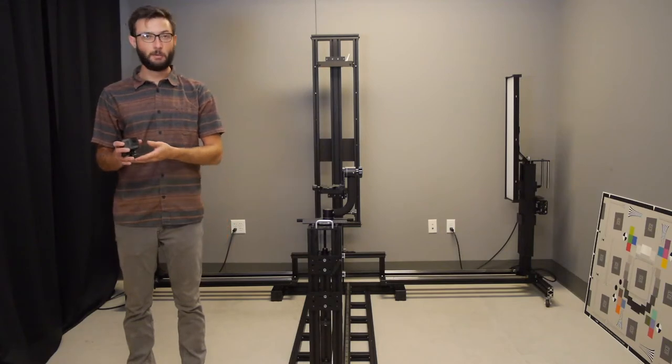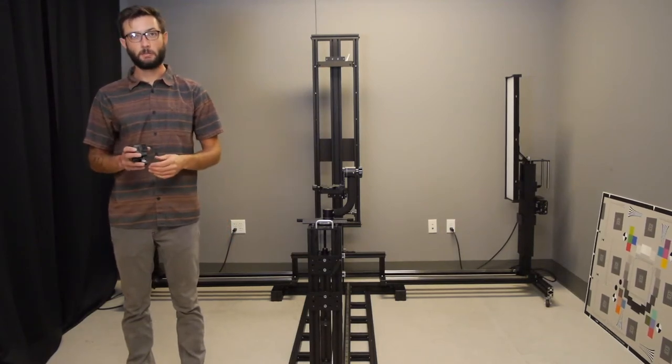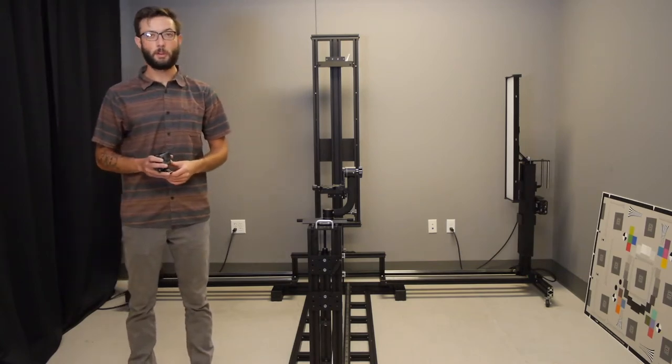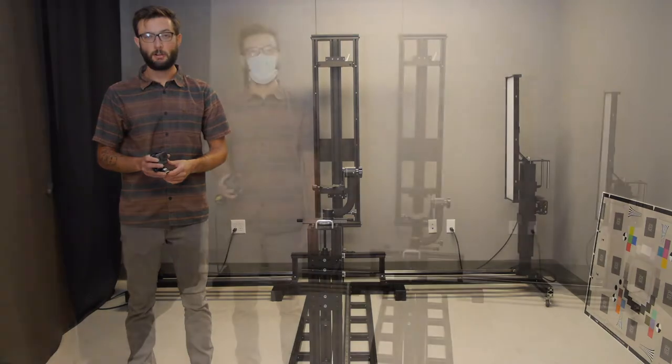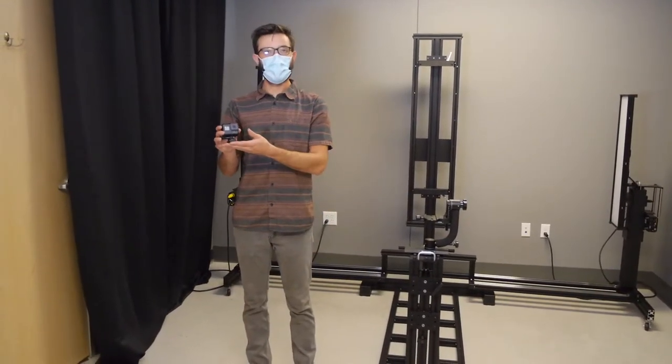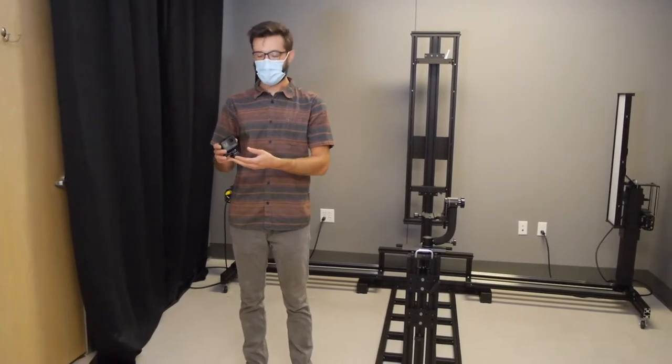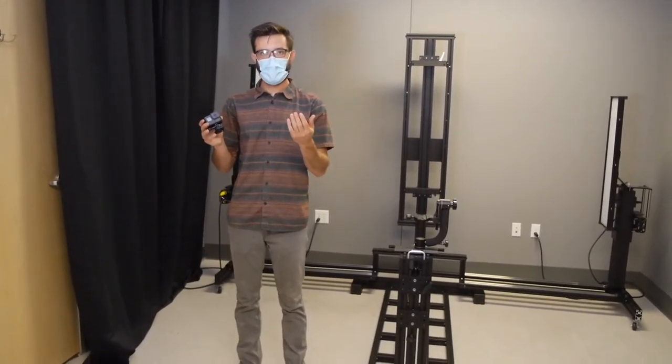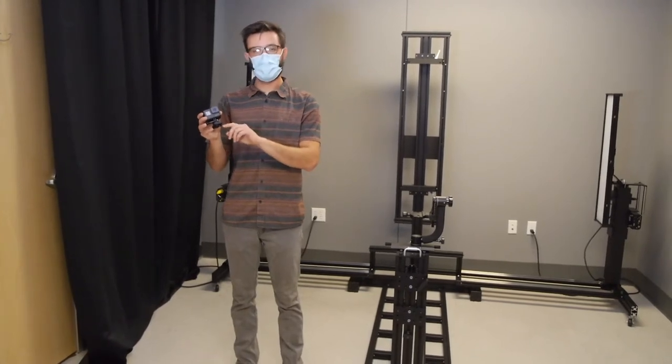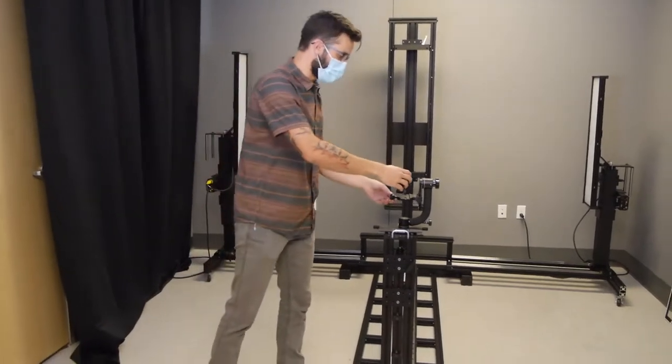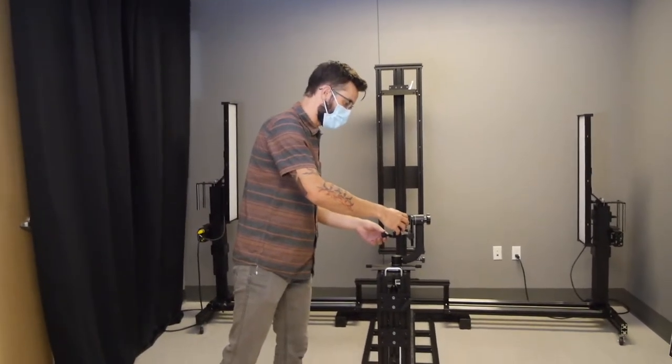So today we're going to be getting set up with a GoPro camera. This is a real basic kind of wide-angle camera system. It's good for demonstration and we're going to be getting that set up with our ESFR ISO chart. Alright so let's go ahead and get started with getting our GoPro mounted onto the camera post. It's just the standard GoPro with a tripod foot on the bottom for a standard tripod head.